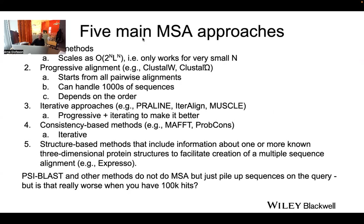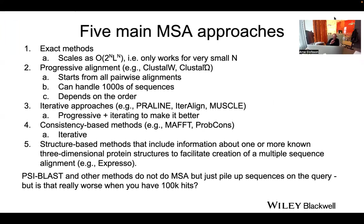In principle there are five or even six different ways to calculate an MSA. You can do it using an exact method — comparing all sequences against all sequences, all combinations. The problem is this scales like 2 to the power N times L to the power N sequences, so it's only feasible for maybe five sequences. It's basically unfeasible, but it is the optimal approach.